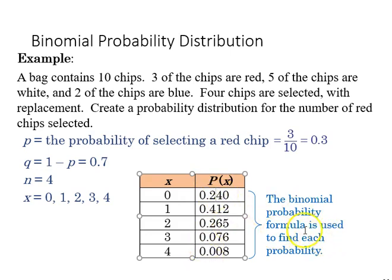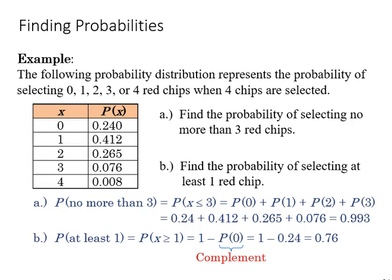So the binomial probability formula is used to calculate each of those separate probabilities. If we extend this a little further we can also figure out the probability of selecting no more than three red chips.